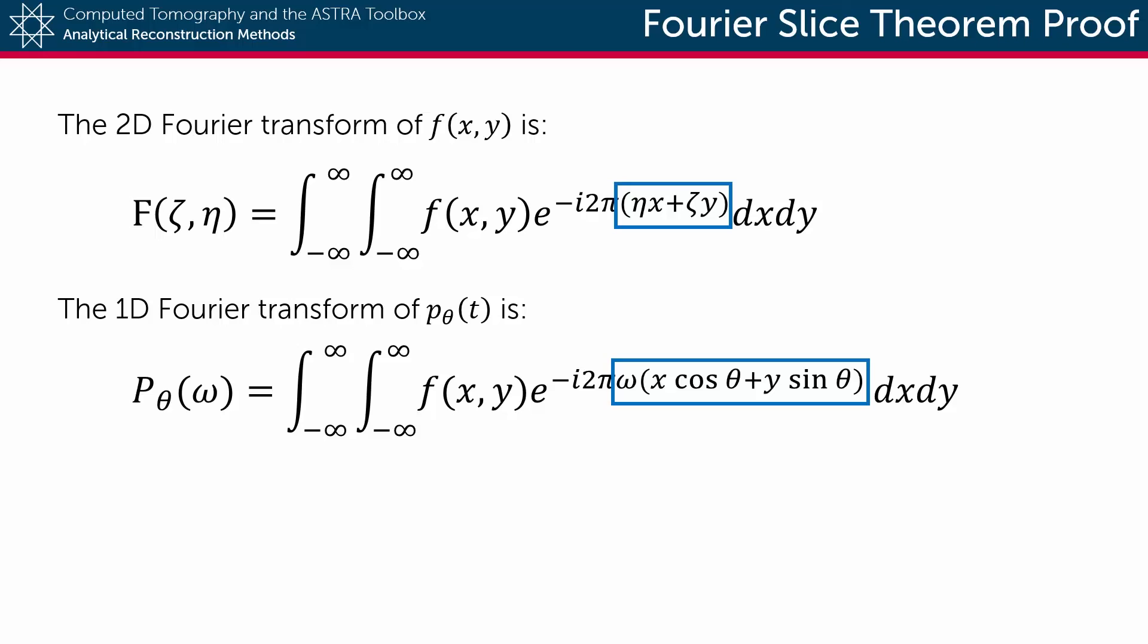And indeed, if we substitute eta for omega cosine theta and substitute zeta for omega sine theta, we get that the one-dimensional Fourier transform of the detector function equals the line tilted at an angle theta of the Fourier transform of the object function, thus proving the Fourier slice theorem.